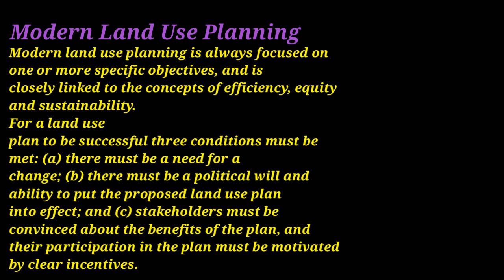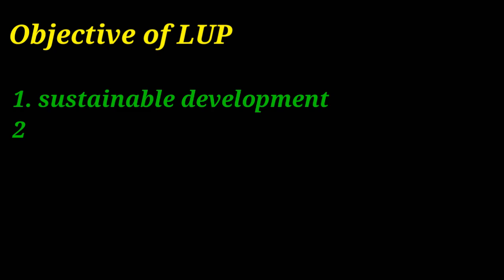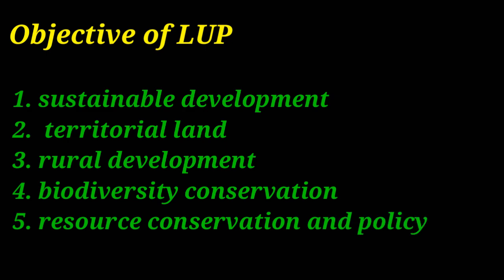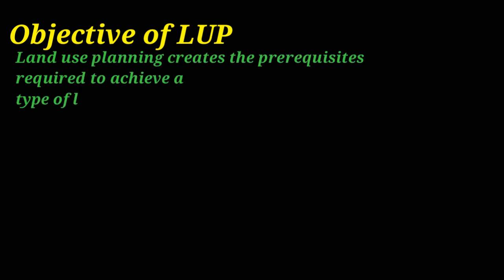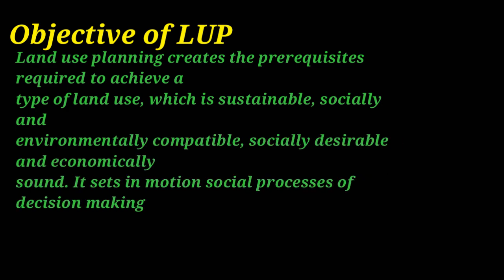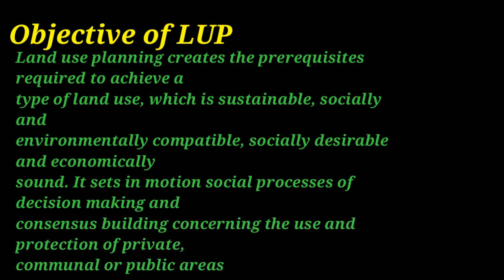Now let's look at the objectives of land use planning. The key objectives are: sustainable development, territorial land use, rural development, conservation, biodiversity conservation, and resource conservation and policy. To sum up, land use planning creates the preconditions required to achieve a type of land use which is sustainable — environmentally capable, socially desirable, and economically sound. It also sets in motion social processes of decision-making and consensus-building concerning the use and protection of private, commercial, and public areas.